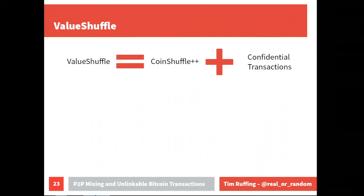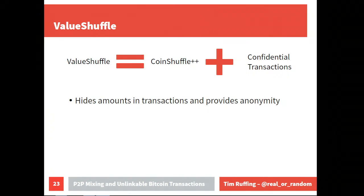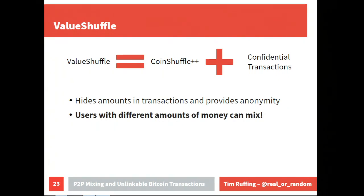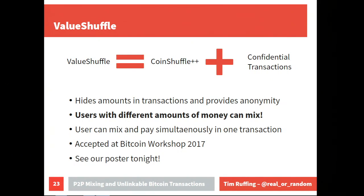Other possible applications of DiceMix include ValueShuffle, which combines CoinShuffle++ with confidential transactions — a proposal by Greg Maxwell that hides transaction amounts. Together, this hides both amounts and provides anonymity, allowing users with different amounts of money to mix, which has always been a difficult problem in practice. Users can also mix and pay simultaneously in one transaction instead of mixing first and spending later. This was accepted at Bitcoin 2017.